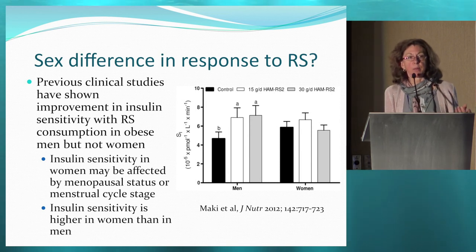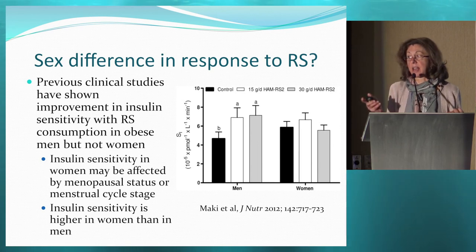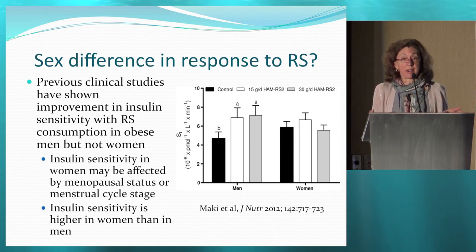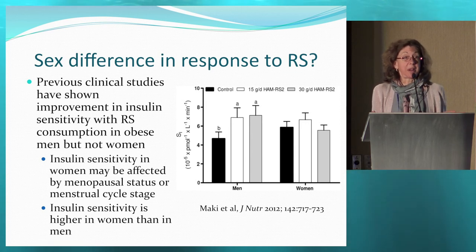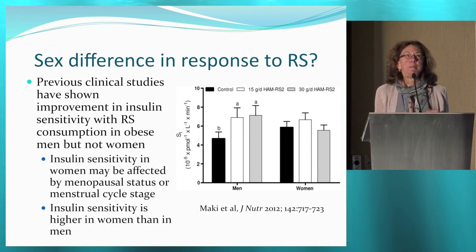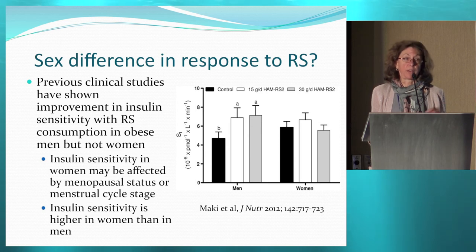The hormonal environment may have been playing a role. Additionally, men have much lower insulin sensitivity than women — even obese women have much higher insulin sensitivity than men. So the thought was that resistant starch may just work better in men because they start out lower, suggesting an effect of baseline insulin sensitivity on response. But that study wasn't really powered to get at that question.